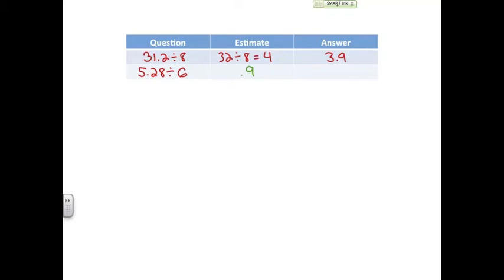Okay, so now let's take a look at solving and getting the exact answer for this. So we have 5.28 divided by 6. 6 goes into 52 eight times. 8 times 6 is 48. When we subtract, we get 4. We bring down our 8.